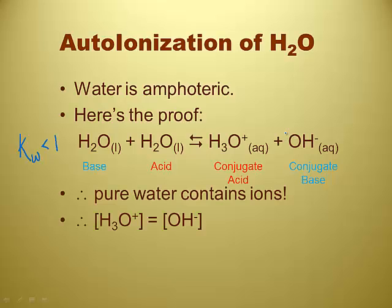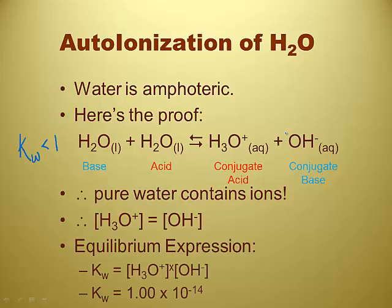Pure water contains some ions — they occur in equal amounts, equal concentrations. We get an equilibrium expression: KW equals hydronium concentration times hydroxide concentration. KW is for water because water can't decide either way. This is at 25 degrees Celsius — always assume 25 degrees Celsius for our purposes. Therefore, your KW will be 1.0 times 10 to the negative 14.